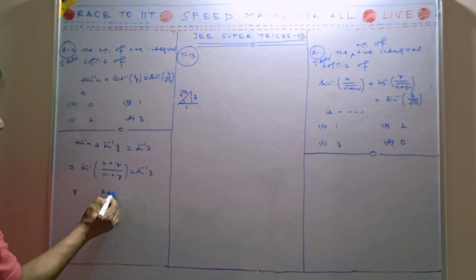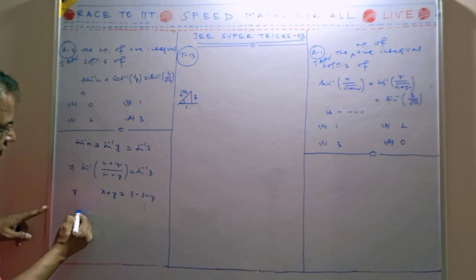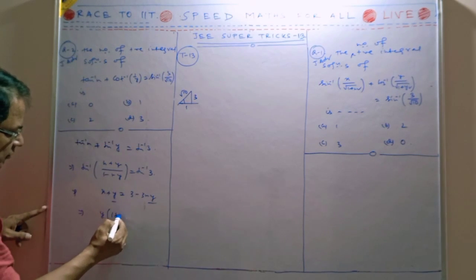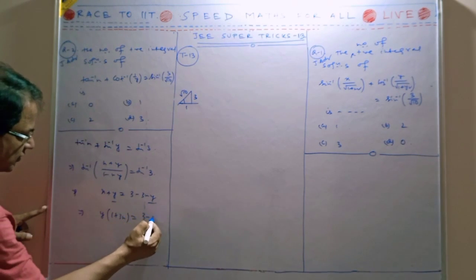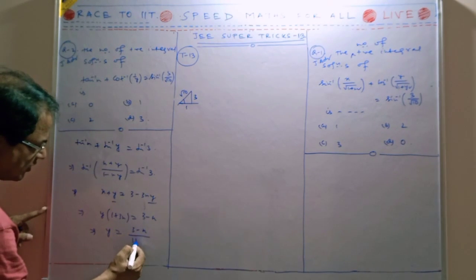So from both sides, we get 3 minus 3xy. Bringing y to one side, y times (1 plus 3x) equals (3 minus x). So y's value is (3 minus x) divided by (1 plus 3x).